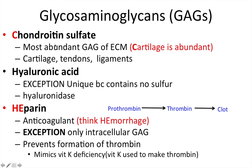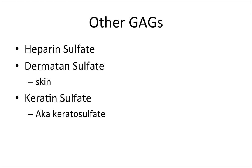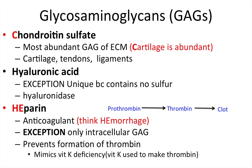I'm going to go through six different types of GAGs, but focus on three — these three are overwhelmingly the most tested. First is chondroitin sulfate, which is the most abundant GAG of the extracellular matrix. It's part of cartilage, tendons, and ligaments. The way I remember this is: cartilage is abundant.